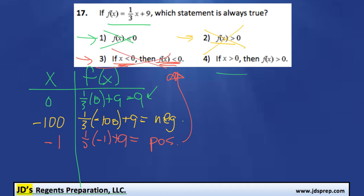That leaves us with option 4. If x > 0, then f(x) > 0 always. You can identify by looking at the function that this is always true. 1/3 of a positive number gives a positive number, and if you add 9 to it, it's still positive. So that one's always true.